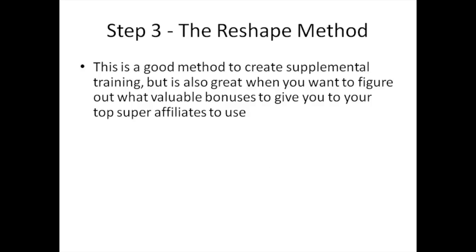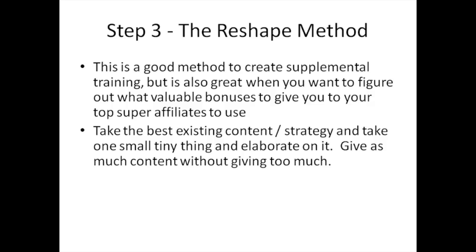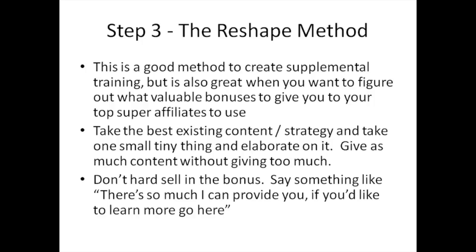Step number three is the Reshape Method. This is a really good method for creating supplemental training or other types of media for your product, and it's also great for figuring out what kind of valuable bonuses to give your top super affiliates and other affiliates. The strategy is: take the best existing content or strategy, pick one small thing, and elaborate on it — give good content without giving too much, and don't hard sell in the bonus. At the end, say something like 'there's so much more I can provide — if you'd like to learn more, go here,' and point them to your product. It acts as a pre-selling mechanism.